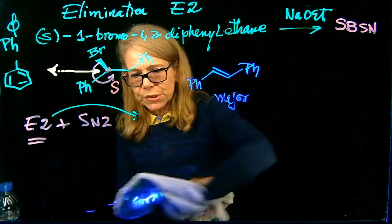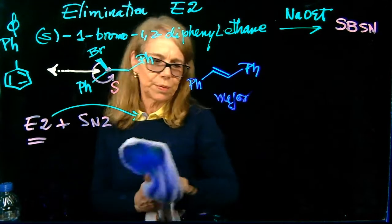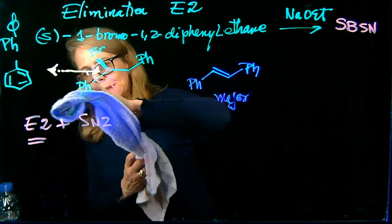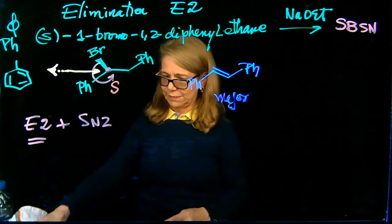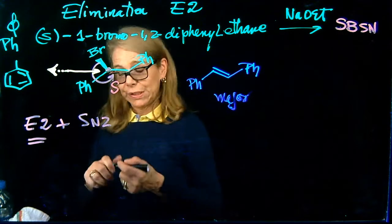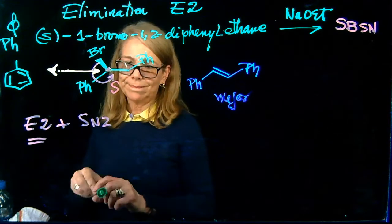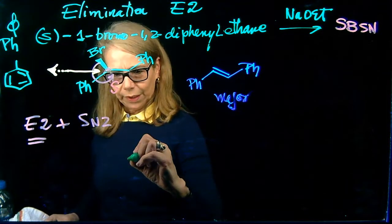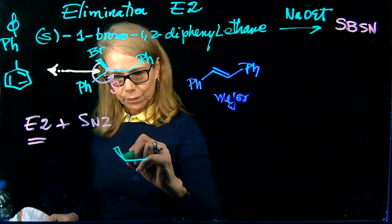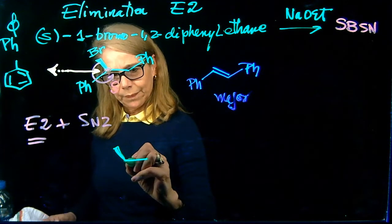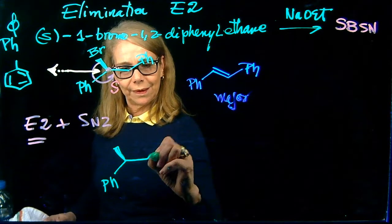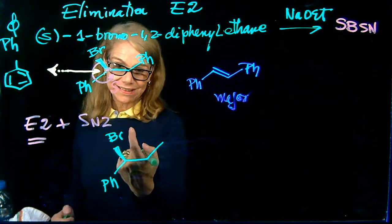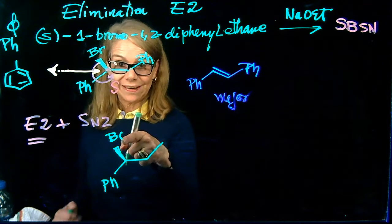And similar to the E2, the SN2 process is concerted, and it happens with a backside attack of the nucleophile. So, I'm going to draw my structure just to show the backside attack. I'm going to have bromine here, and this is phenyl. That's another phenyl. So, this bromine is pointing towards you, so it is in a wedge.